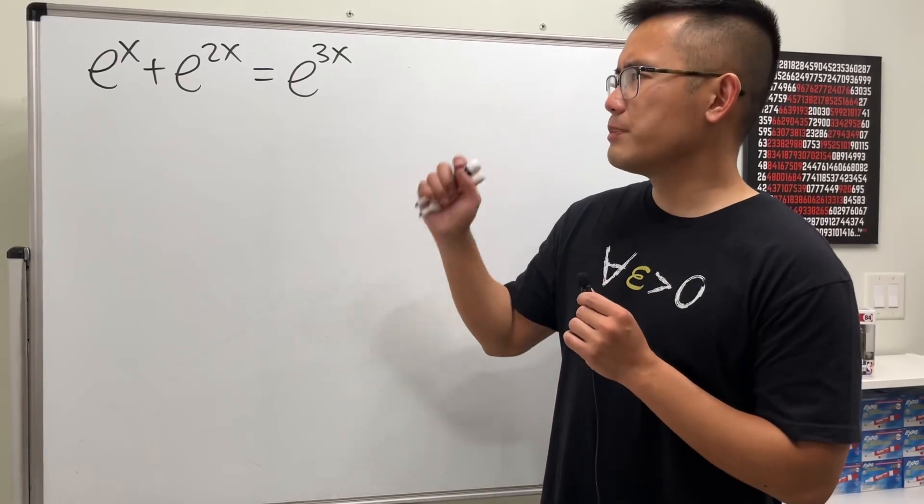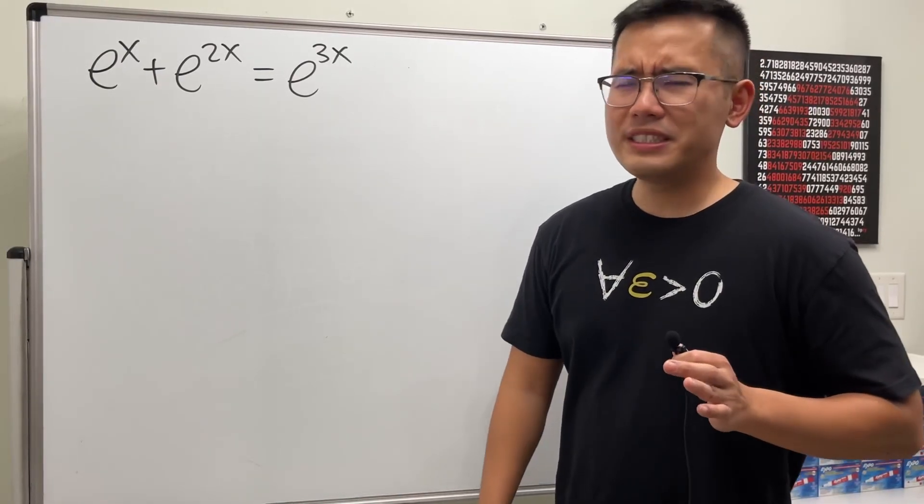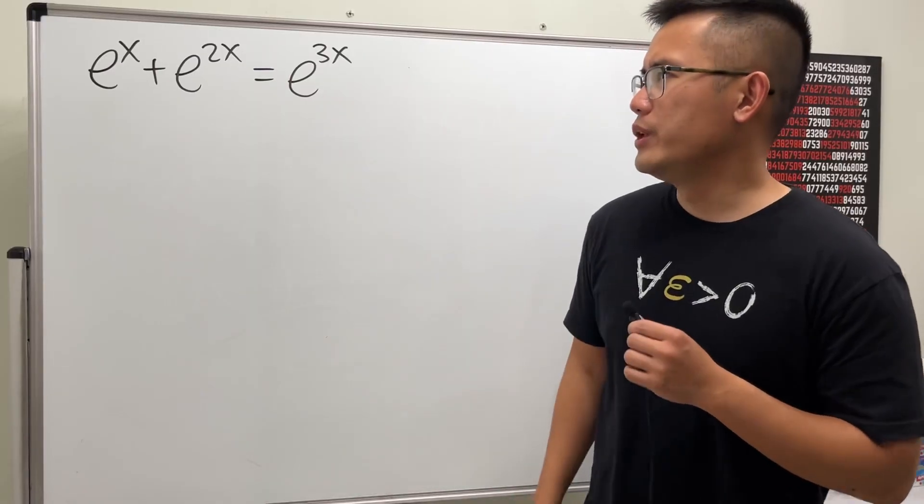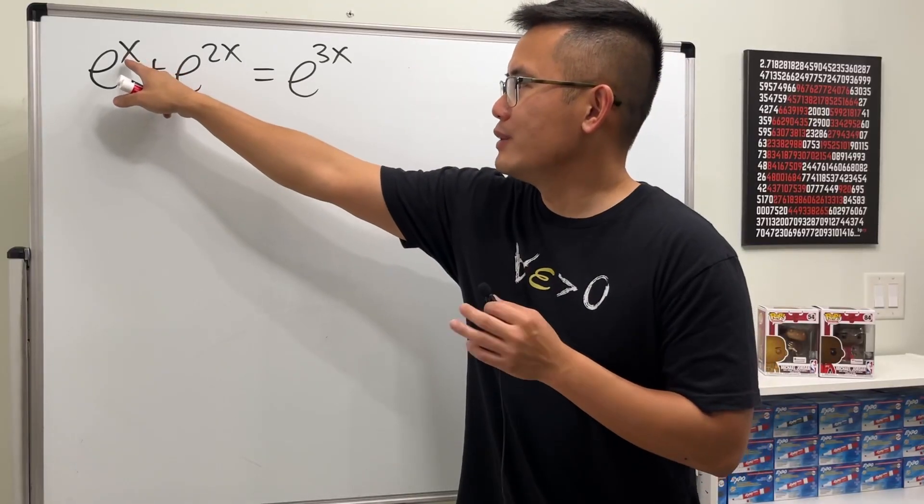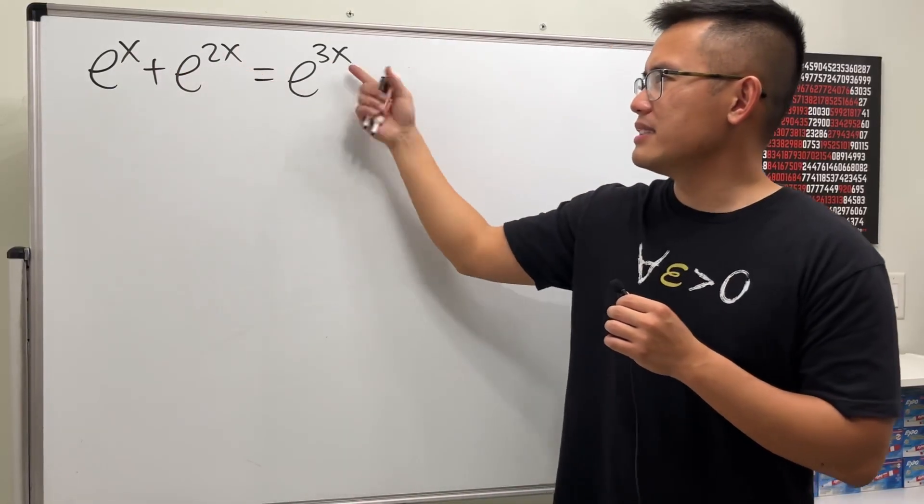Okay, let's see how we can solve this exponential equation. The exponent is kind of weird because we have e^x + e^(2x), and then I think we just do like x + 2x, that's equal to 3x.